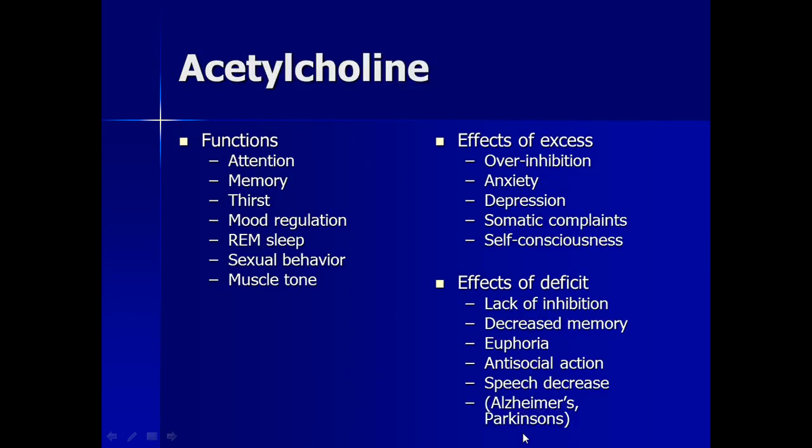Acetylcholine is the neurotransmitter used by peripheral neurons that innervate the muscles. Stimulation of acetylcholine receptors on muscle results in their contraction. If acetylcholine is not released, our muscles would be paralyzed.